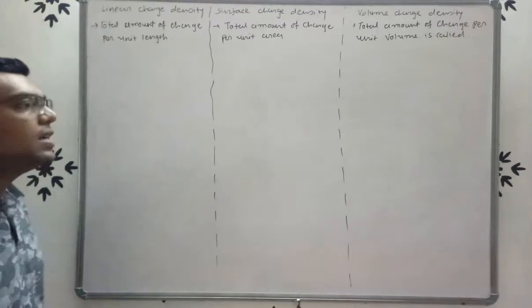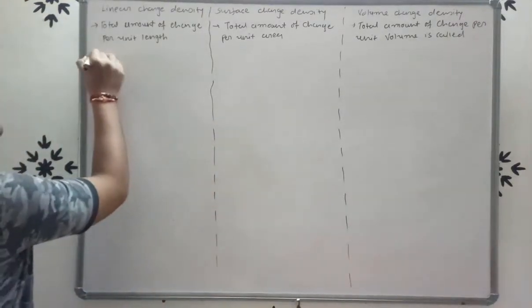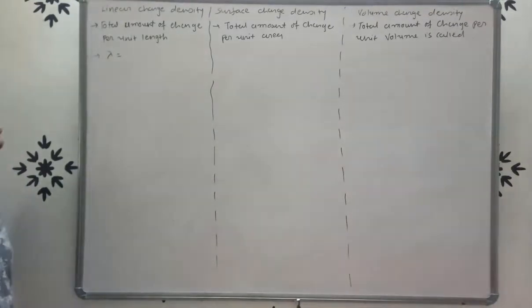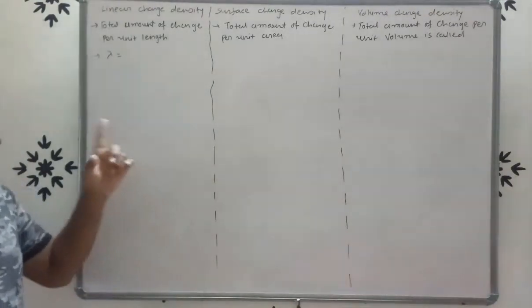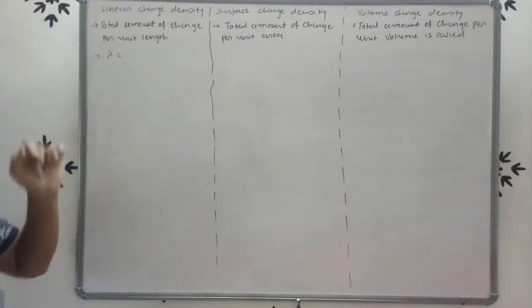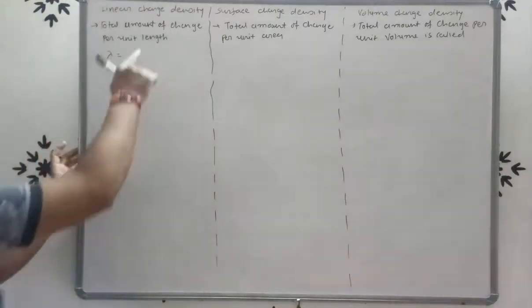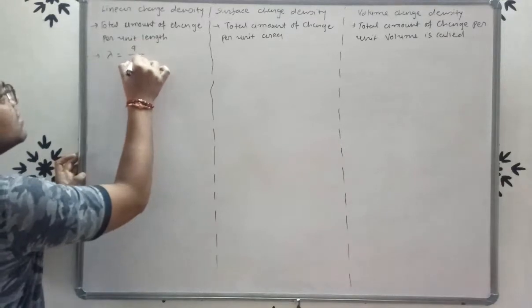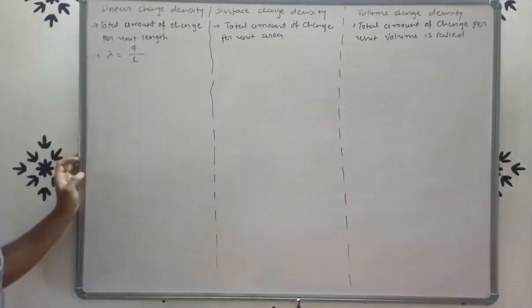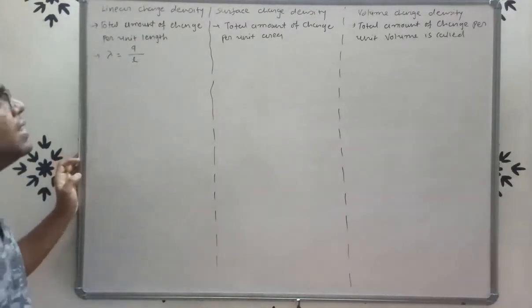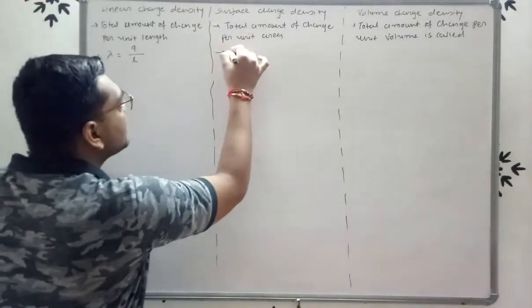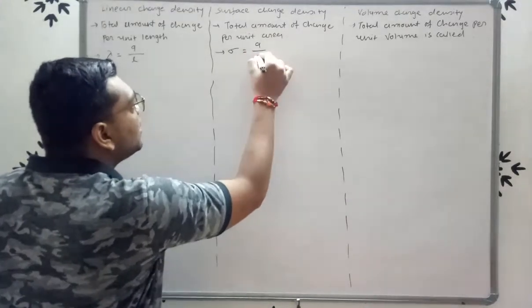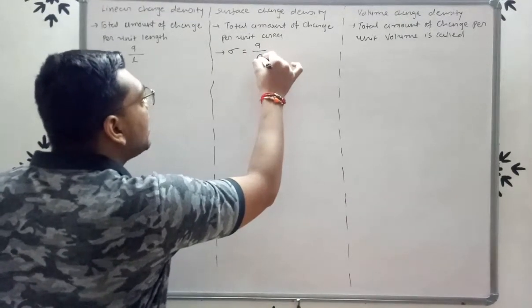The symbol for linear charge density is lambda. So lambda is equal to total charge Q per unit length: λ = Q/L. Surface charge density is given by sigma (σ), so sigma equals total charge Q per unit area: σ = Q/A.